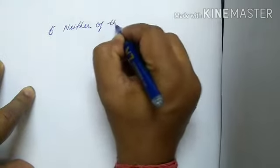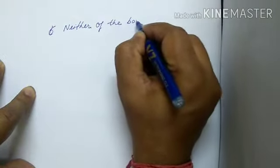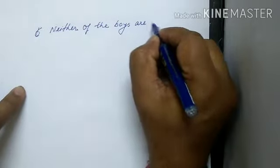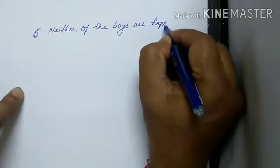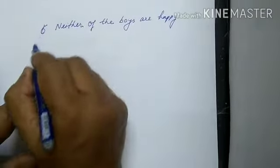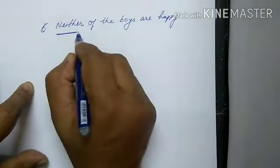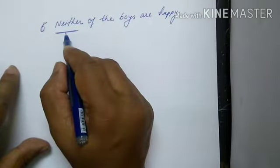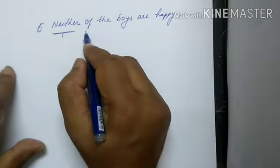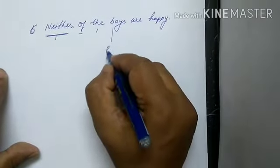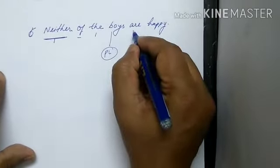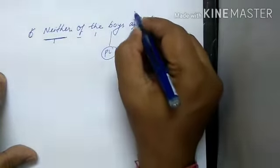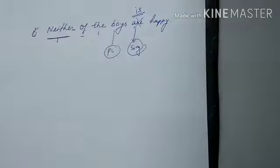'Neither of the boys are happy.' Now, the subject of this sentence is 'neither'. According to our rule, when 'of' follows either or neither, the noun becomes plural but the verb must be in singular form. So the error here is 'are' — the correction is: 'Neither of the boys is happy.'